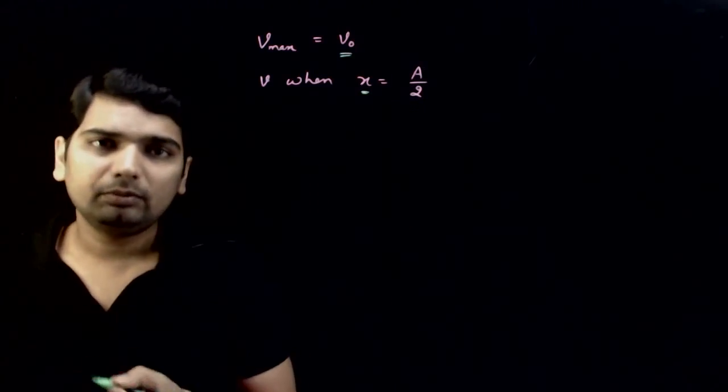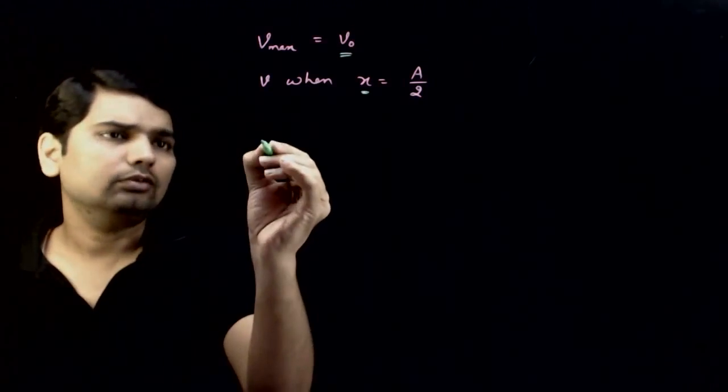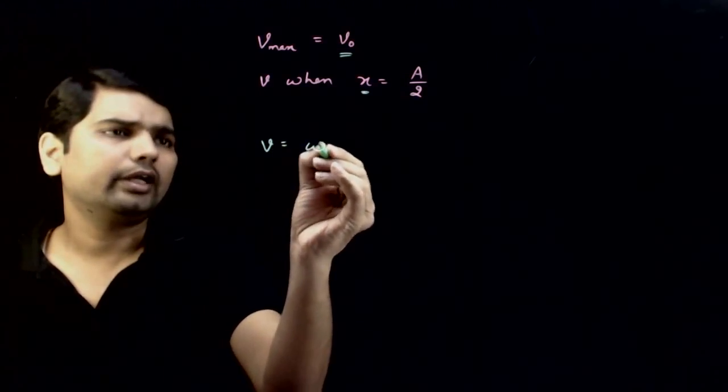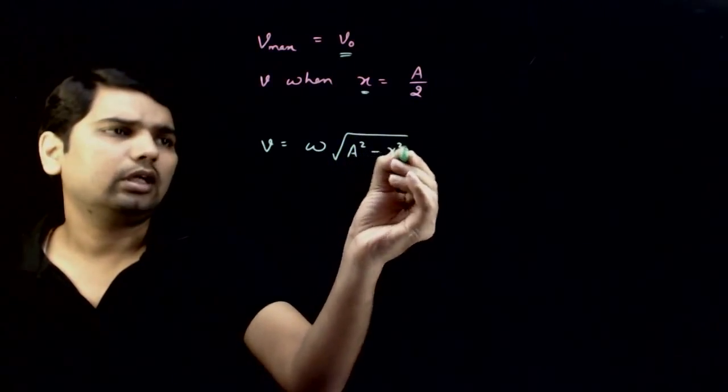So, x is equal to a by 2. We have a formula that v is equal to omega times under root of a square minus x square.